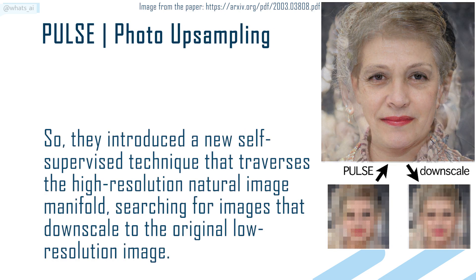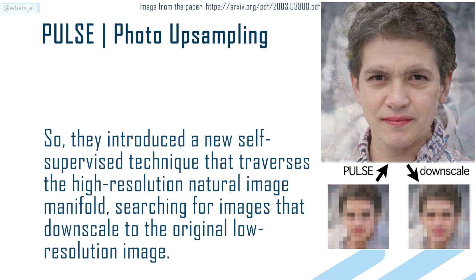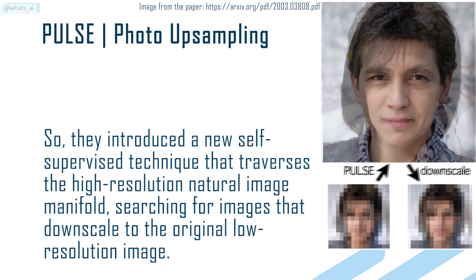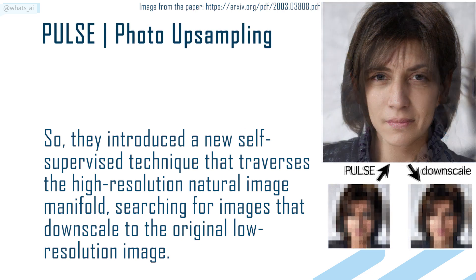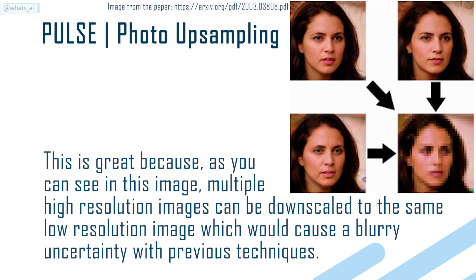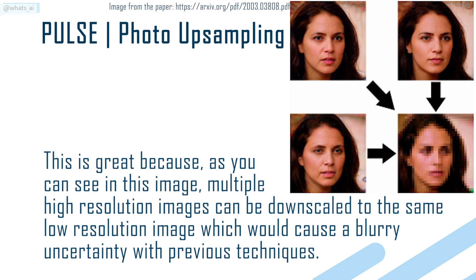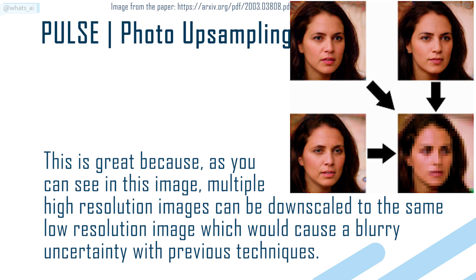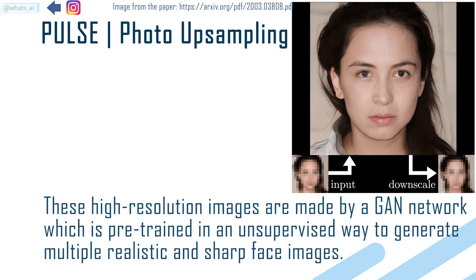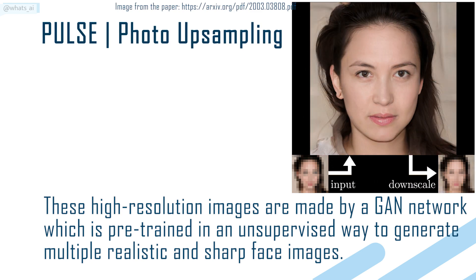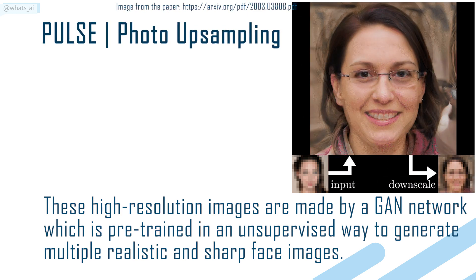They introduced a new self-supervised technique that traverses the high-resolution natural image manifold, searching for images that downscale to the original low-resolution image. This is great because, as you can see in this image, multiple high-resolution images can be downscaled to the same low-resolution image, which will cause a blurry uncertainty with previous techniques. These high-resolution images are made by a GAN network, which is pre-trained in an unsupervised way to generate multiple realistic and sharp-faced images.